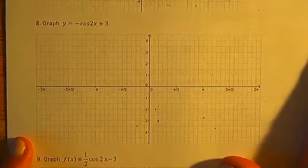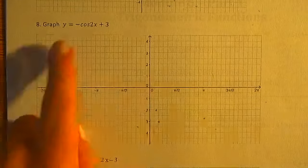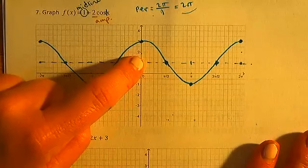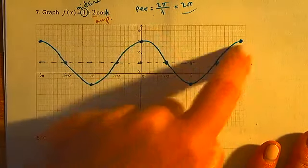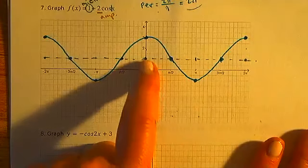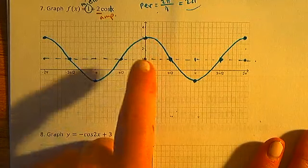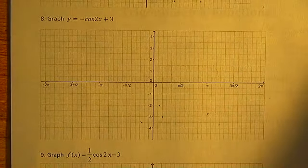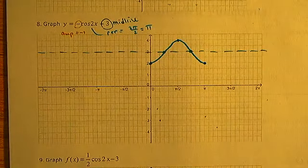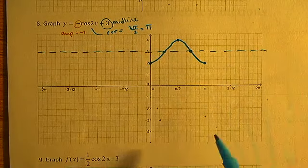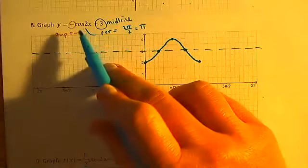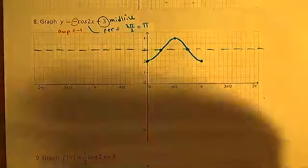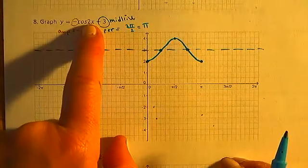Pause and try the next one. Notice the cosine is negative here, so instead of starting above the midline and smiling, it starts below — it'll be a frown. The key shows: midline at positive three, amplitude is an invisible one so peaks and valleys are one unit from the midline, and the period is pi because b is two. It's a frown shape because of the negative amplitude.